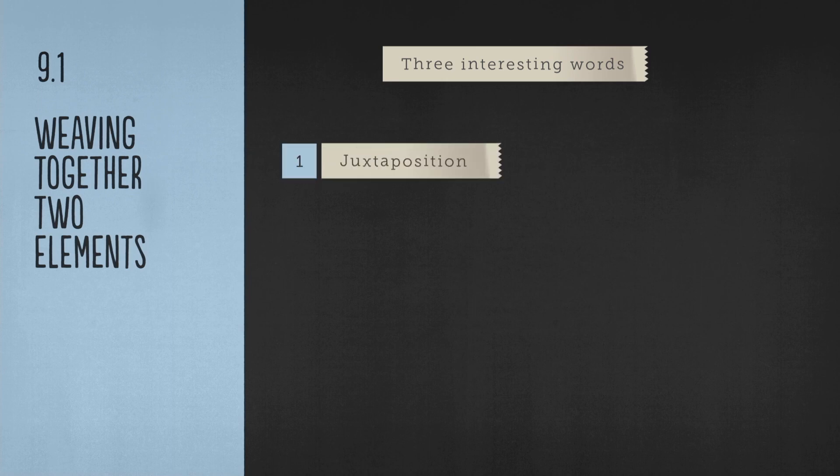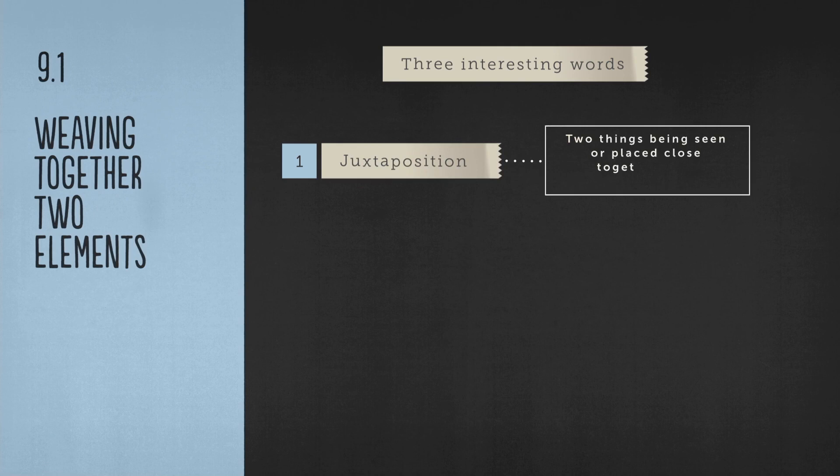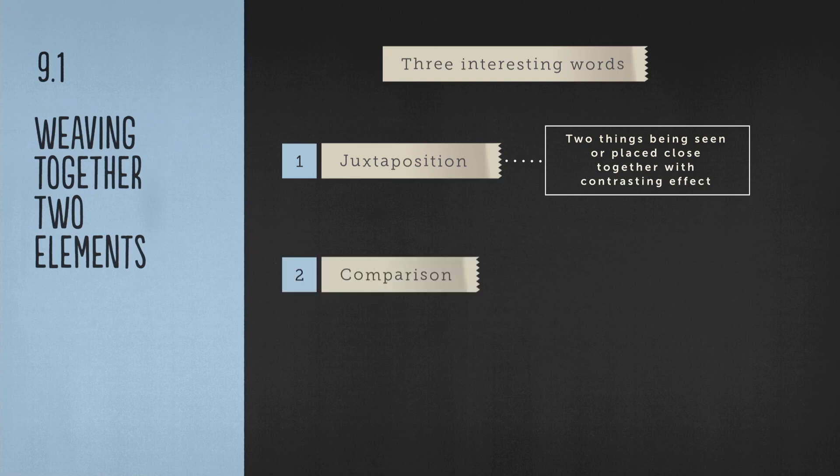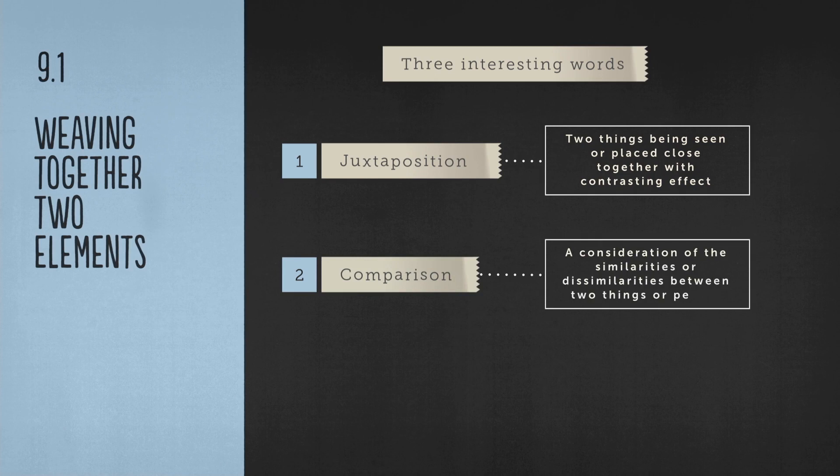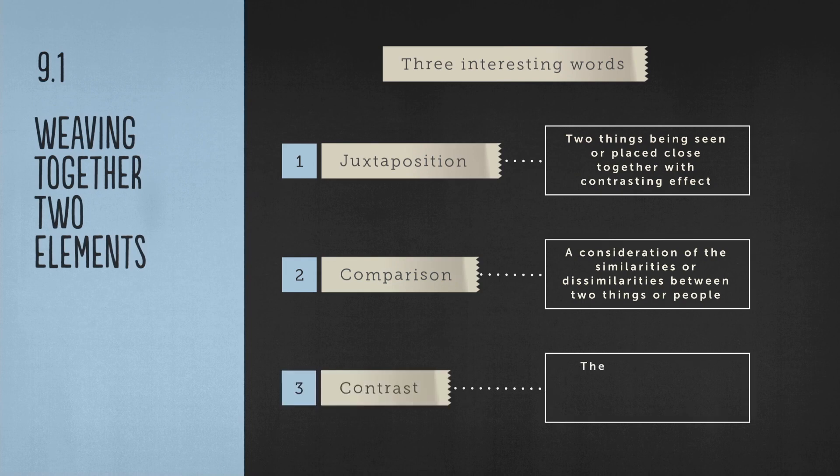Firstly, juxtaposition. Two things being seen or placed close together with contrasting effect. Secondly, comparison. A consideration of the similarities or dissimilarities between two things or people. And thirdly, contrast. The state of being strikingly different from something else in close association.